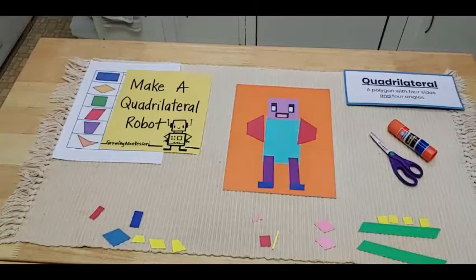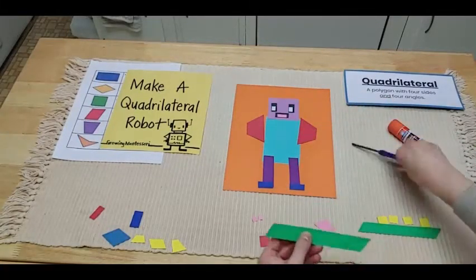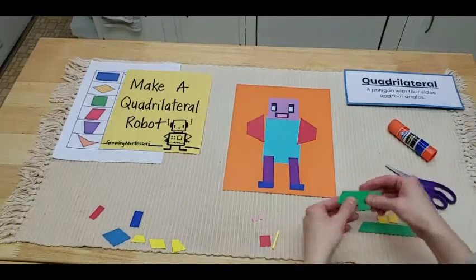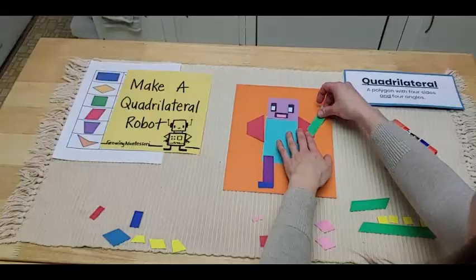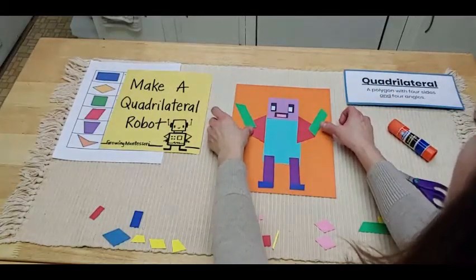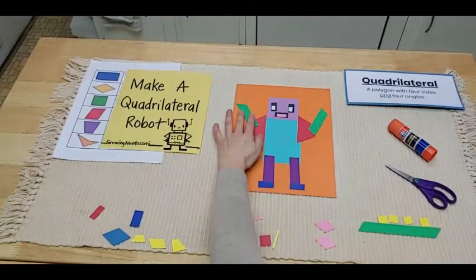Next, I feel like my robot needs some arms. Hmm. I think this parallelogram would be perfect. I'm just going to cut it to make it smaller. There we go. He's putting his arms up. He's super excited. He's like, yeah, Heather's finally making a robot. Woo hoo.